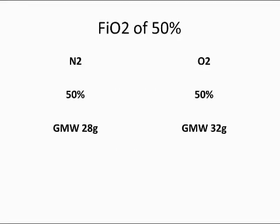Now, let's use another example. We're going to use a FiO2 concentration of 50%. So with a 50% setting, we have nitrogen at 50% and oxygen at 50%, and there's our gram molecular weight. So let's plug in the equation.